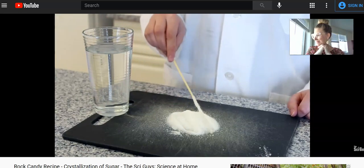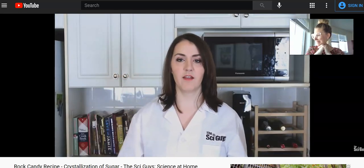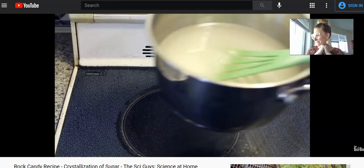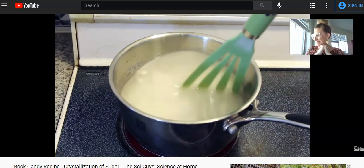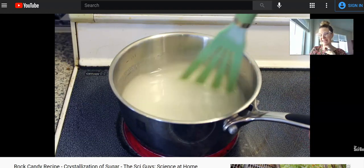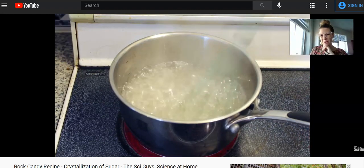This will create the seed crystals for our rock candy. Once it's coated, set it aside until it's dry. While you wait for your sticks to dry, place the pot that contains the solution onto the stove and turn the stove up to high. Now notice, is that dissolved to start with?